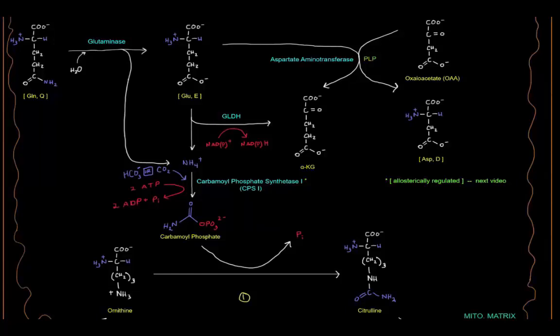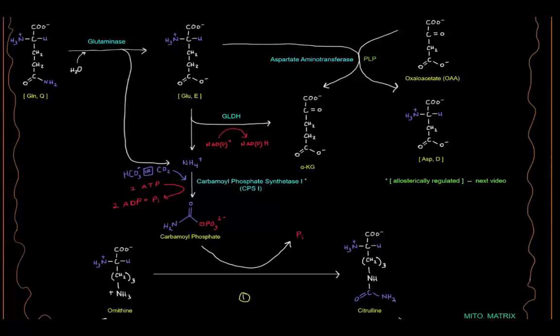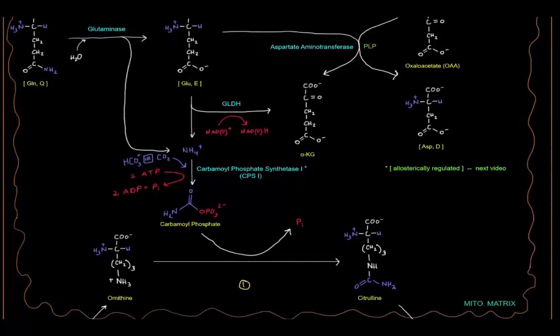Okay, so then we actually have the urea cycle. The carbamoyl phosphate is ready to go and it is going to combine with ornithine where the first step of the urea cycle is actually happening in the mitochondrial matrix. So we're going to start off over here with ornithine.